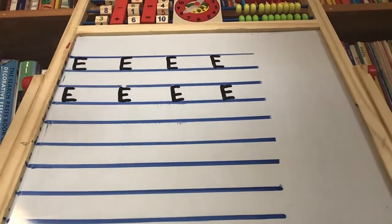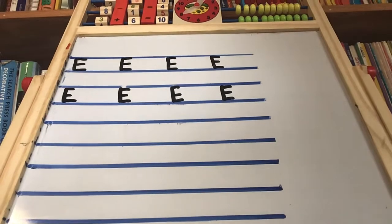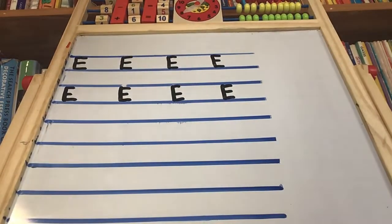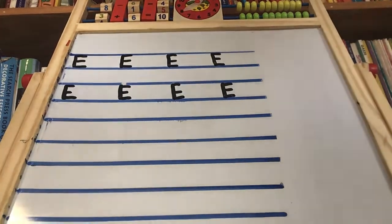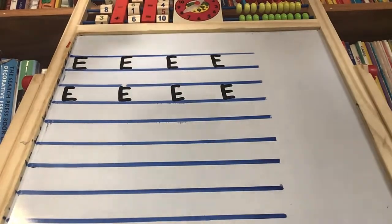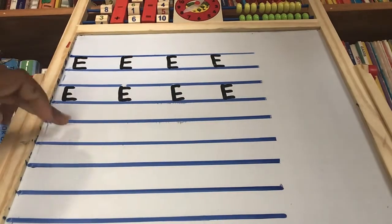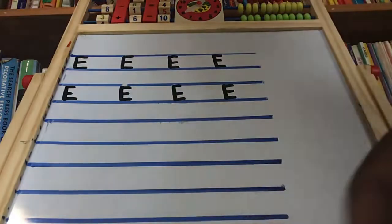And then we're going to skip another line and do our common e. So for the common e, we are going to take up about half of the space. For the capital, we went from the top to the bottom, but for the common e, just half of our space. So we're going to start in the middle of the line.